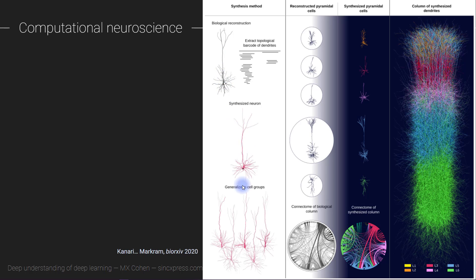These computational neuroscience models are incredibly spatially detailed, morphologically accurate, and physiologically accurate models of individual neurons, organized and connected using principles of connectivity that exist in real brains. These are incredibly detailed simulations, and it usually takes minutes or even a few hours of computation time just to simulate a few milliseconds of neural activity.